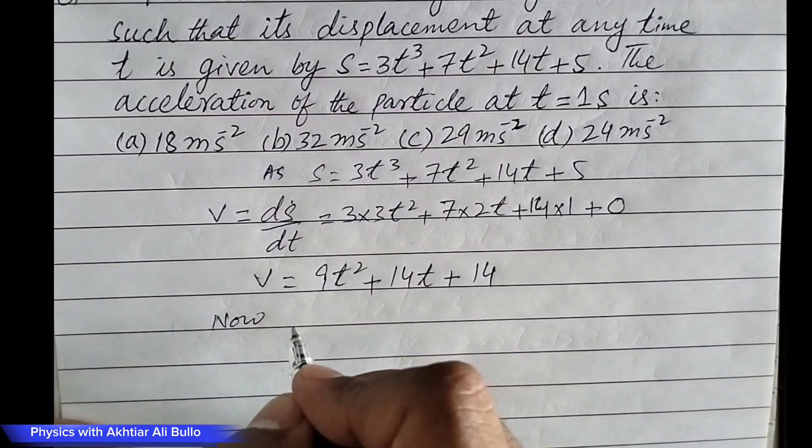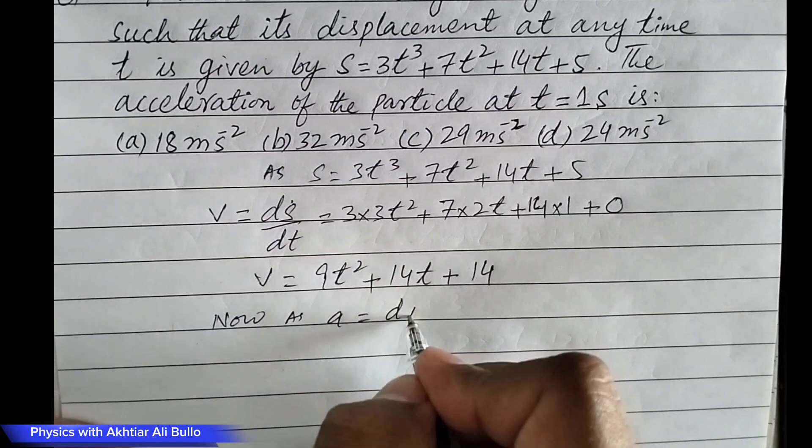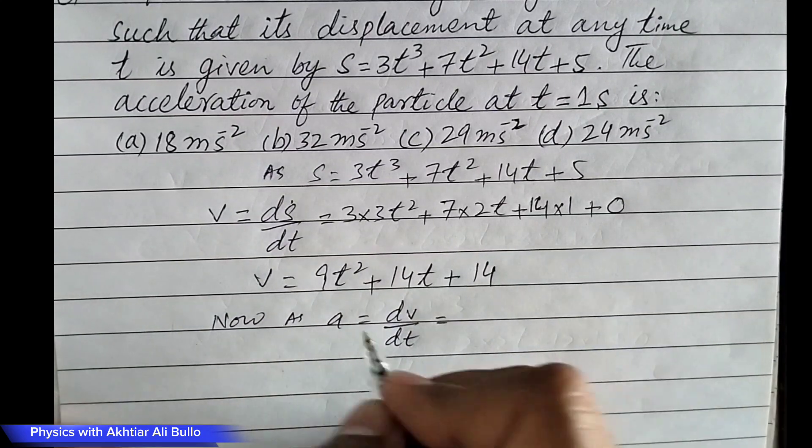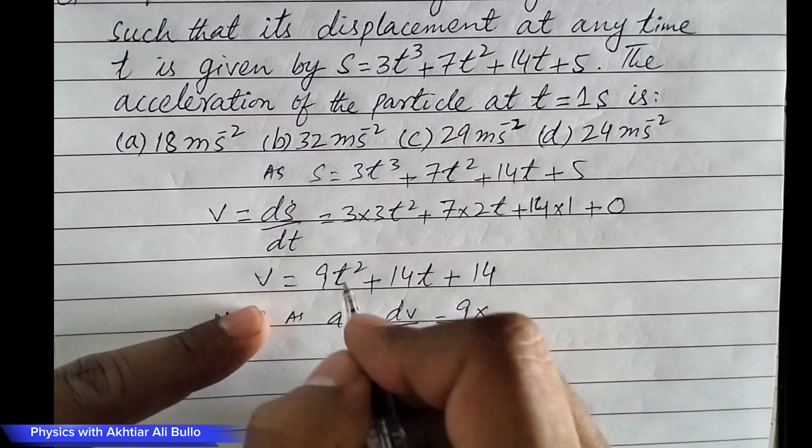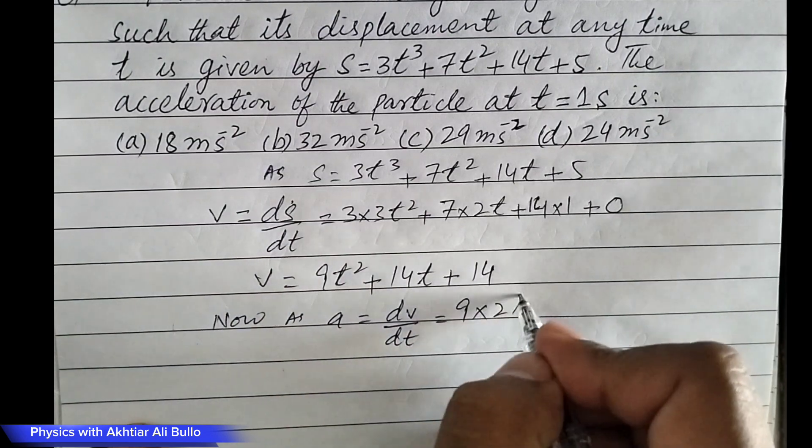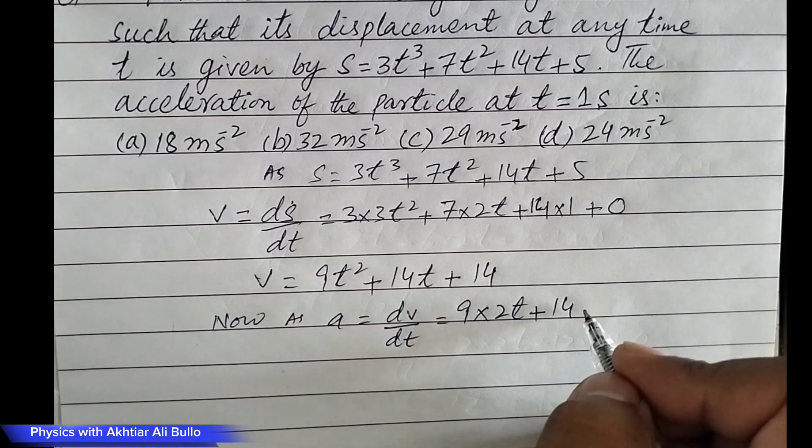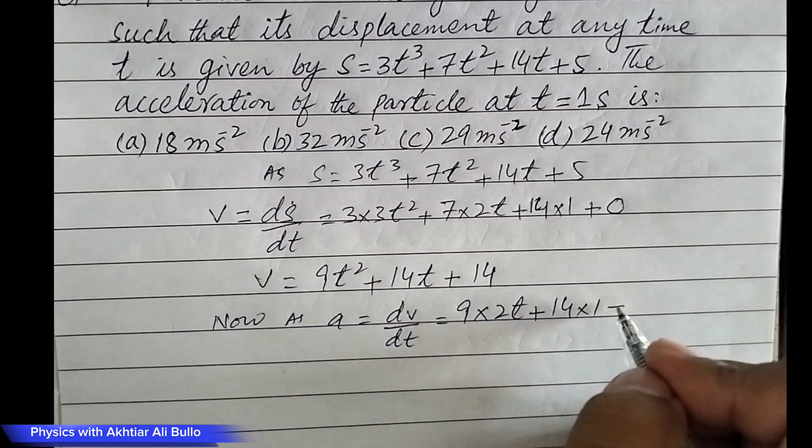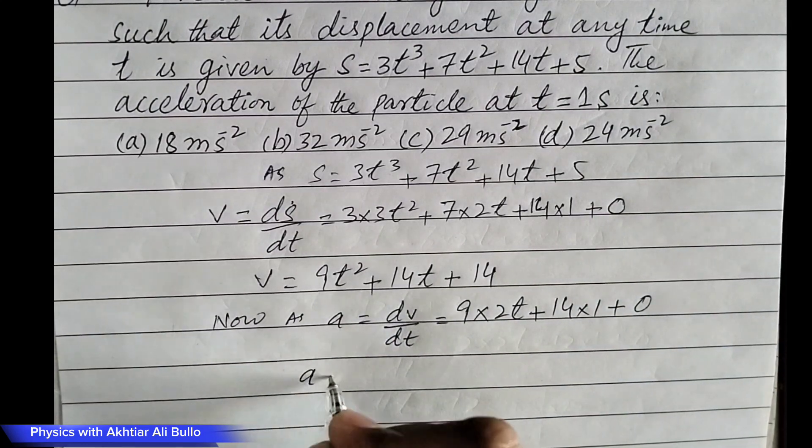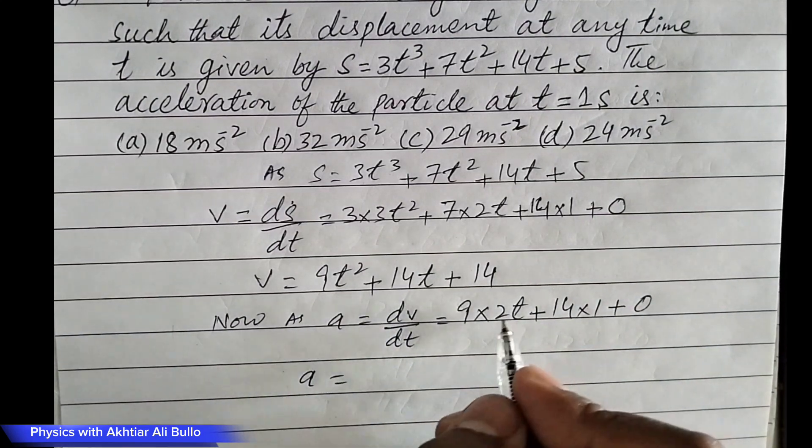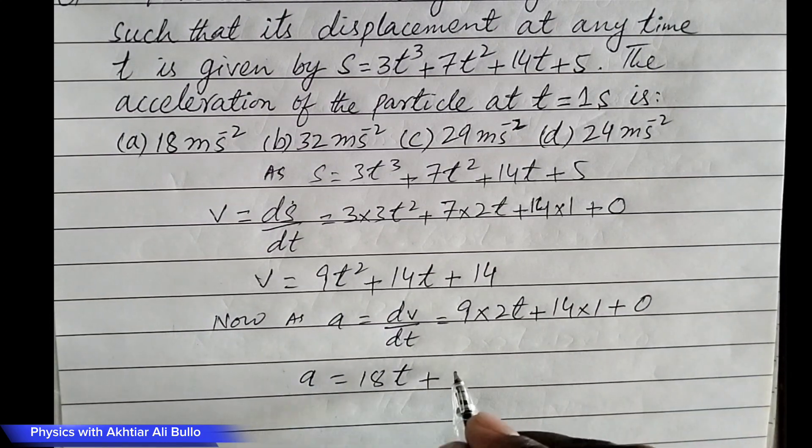Now, acceleration a equals dv upon dt. So, 9 times the derivation of t square will be 2t plus 14. Acceleration will be obtained as 9 into 2, which is 18t plus 14.